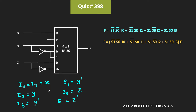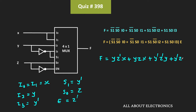Now let us put all these values in the expression. The function f equals s1̄·s0̄·i0. Since s1 equals y', s1̄ equals y, and s0 equals z, we get y·z̄·i0, and i0 equals x. Similarly for the second term, s1̄ equals y, s0 equals z, and i1 equals x. In the third term we have y'·z̄·i2, and i2 equals y. In the last term we have y'·z·i3, and i3 equals y'. So we now have these four terms.